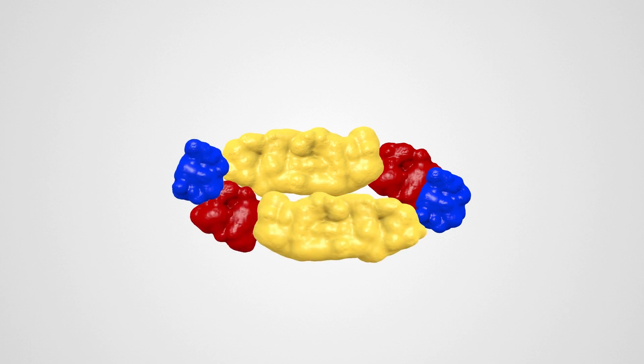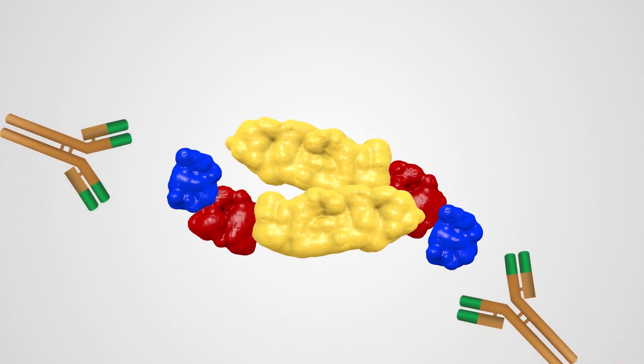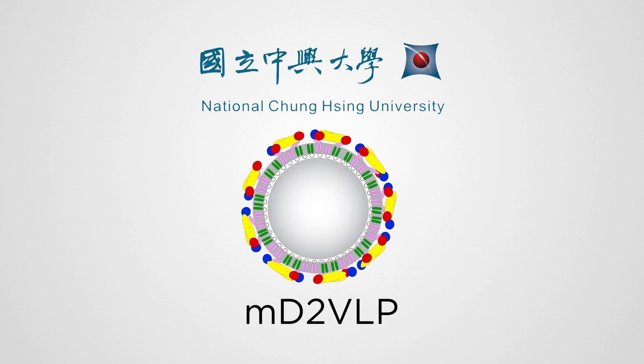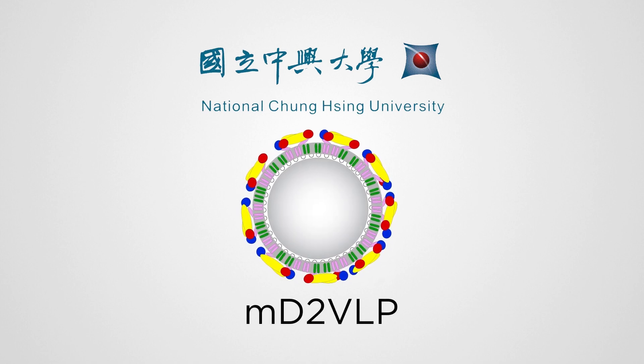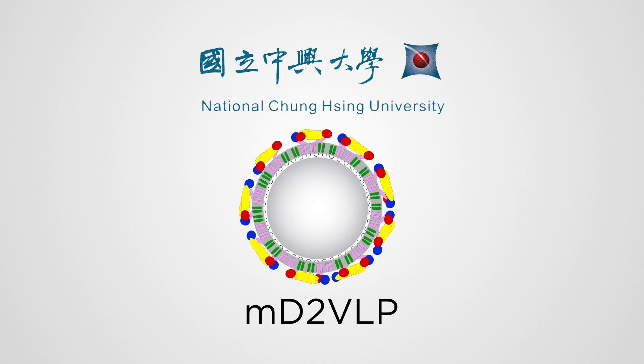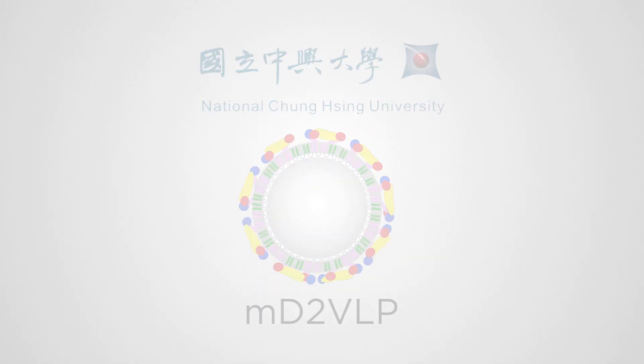Any vaccine candidate must mimic the virus structure and expose these cryptic epitopes. A team of researchers from National Chung Hsing University, Taiwan has shown that the highly mature dengue virus serotype 2 virus-like particle MD2VLP does just that. It mimics the dengue structure and exposes several important cryptic epitopes.